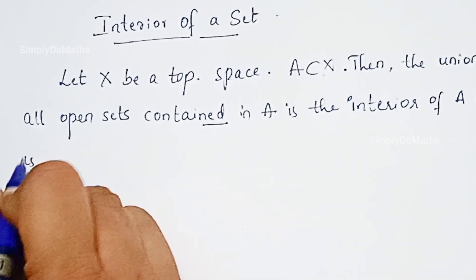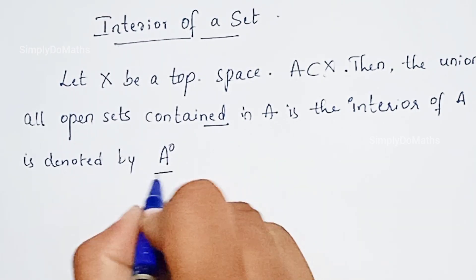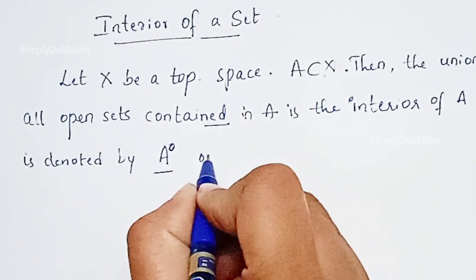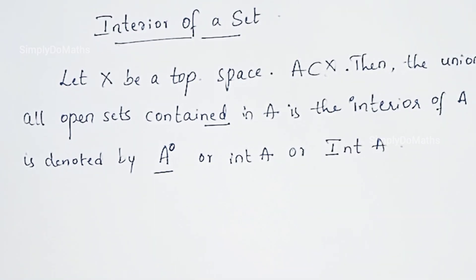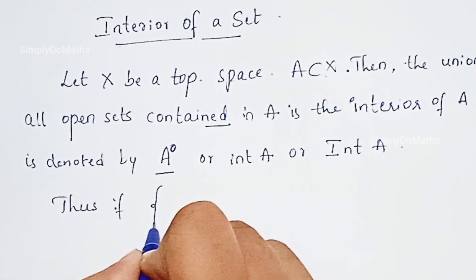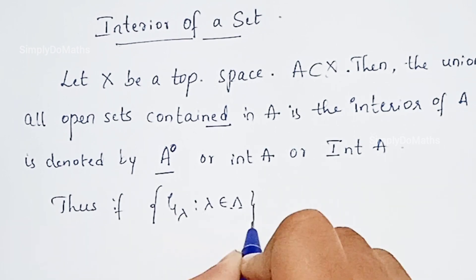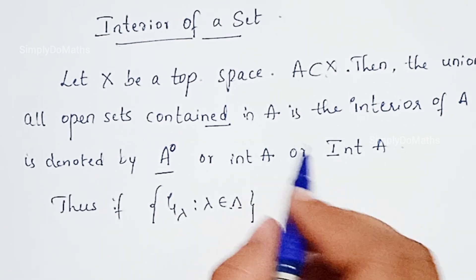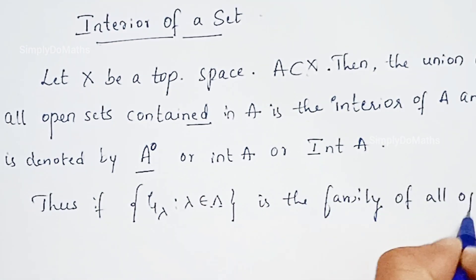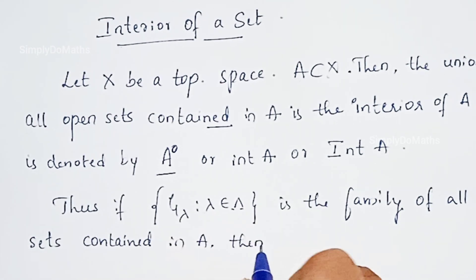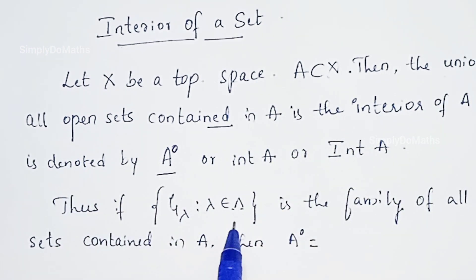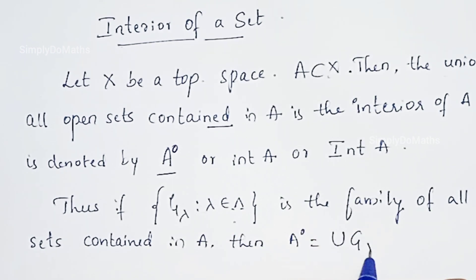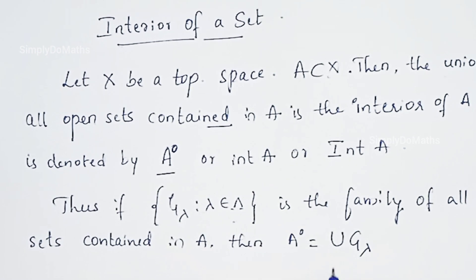The interior of A is denoted by Aº. Sometimes we write Int(A) or capital Int of A. If the family {G_λ : λ ∈ Λ} is the family of all open sets contained in the set A, then by definition the interior of A equals the union of G_λ over all λ in the index set. This is the definition of the interior of A.